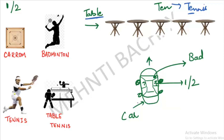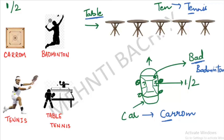Remember the car — there's a bad driver. Because the windows are black, we don't know if one person or two people are inside. So remember: for Carom, Badminton, Tennis, and Table Tennis, players can be 1 or 2. I hope you can understand this trick.